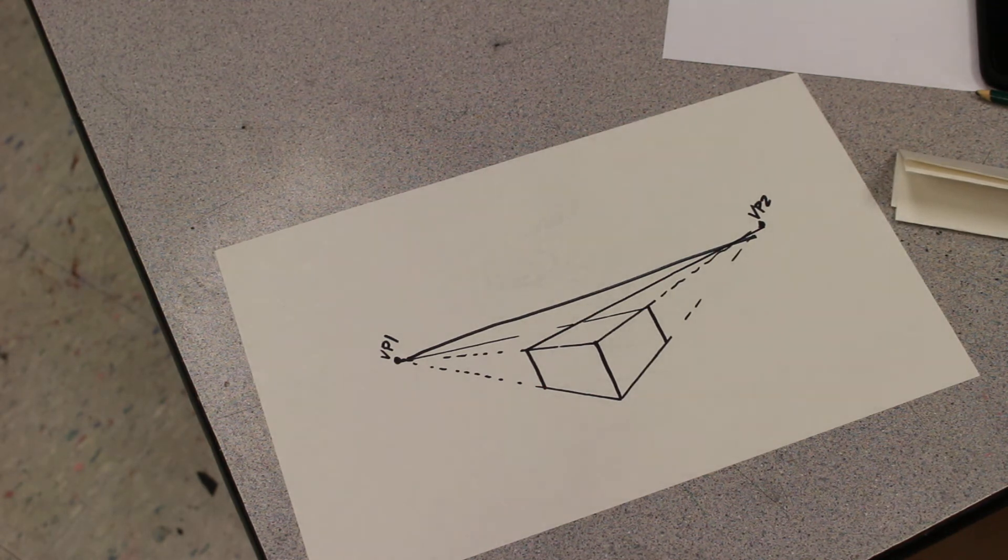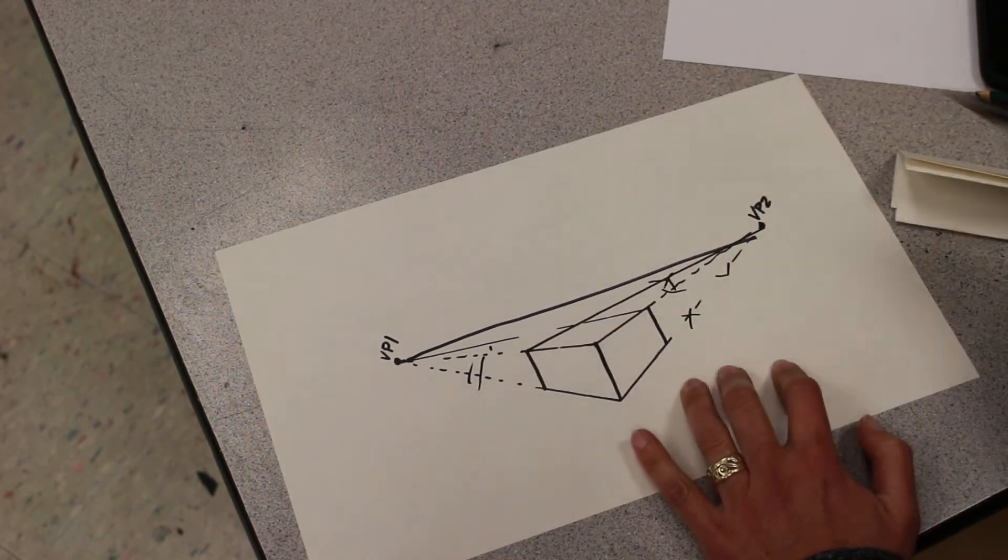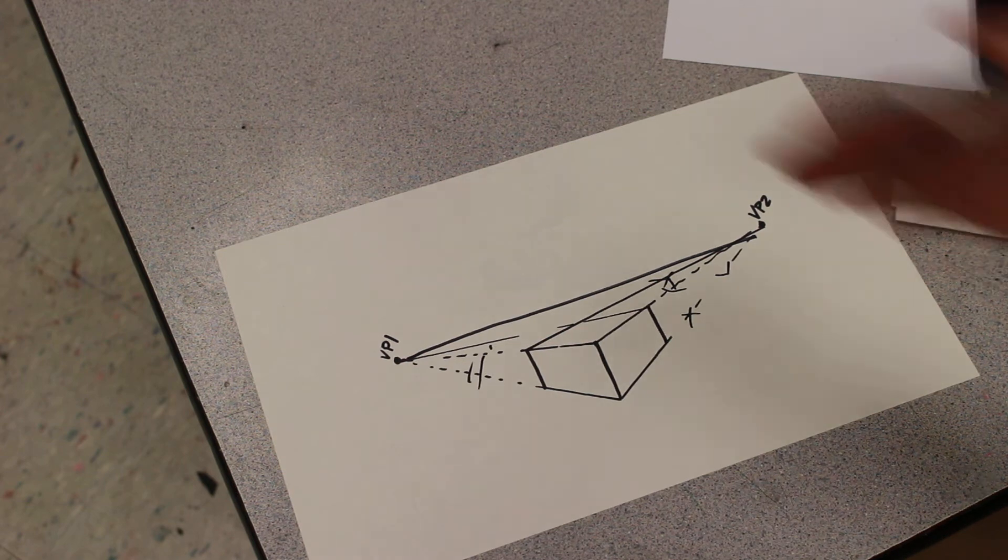So now you have a box in two-point perspective. And I would erase all these orthogonals right here. And this is from bird's eye view because you're looking down at the box.